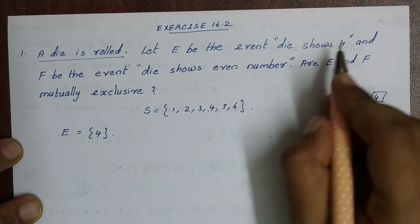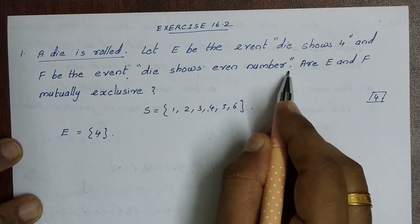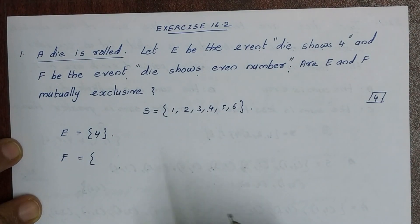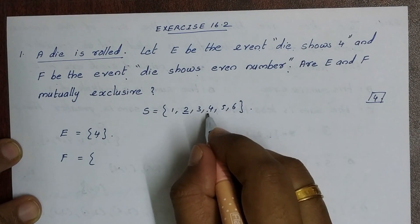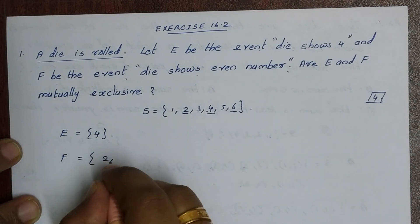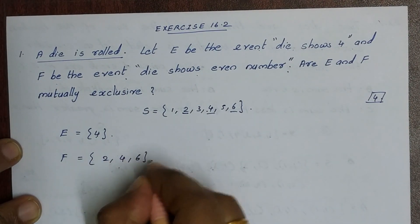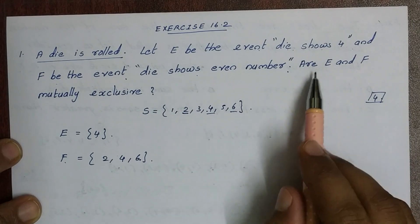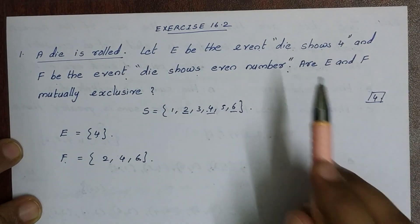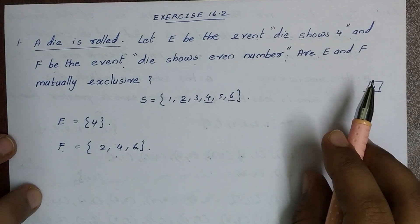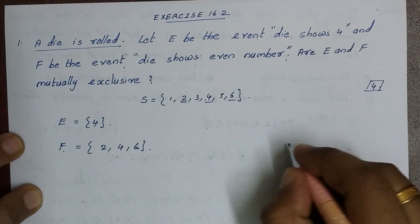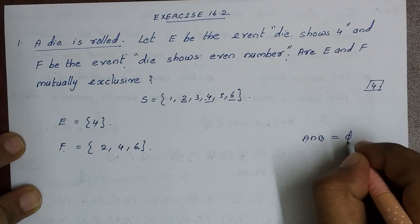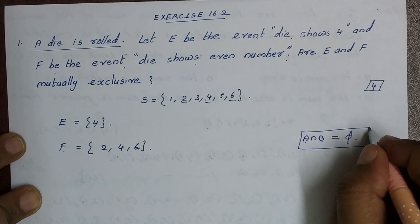So event E = {4}. And F is the event the die shows an even number, so F = {2, 4, 6}. Now we check whether E and F are mutually exclusive. For two events A and B to be mutually exclusive, A intersection B must equal the null set.